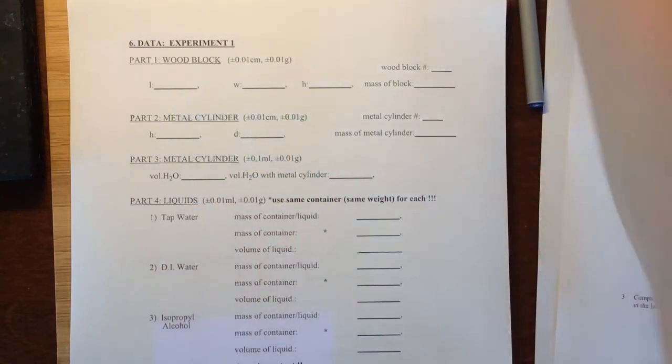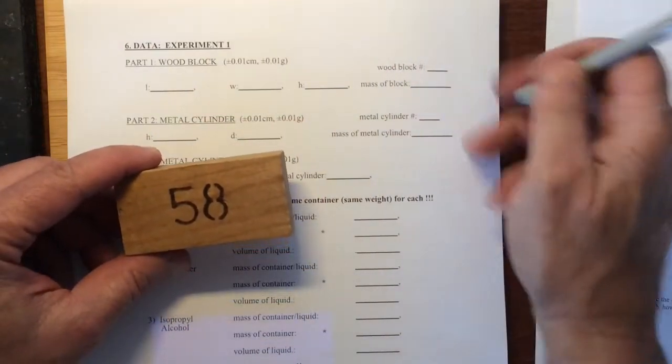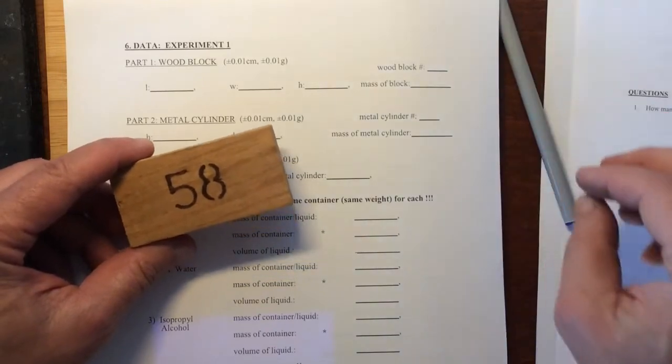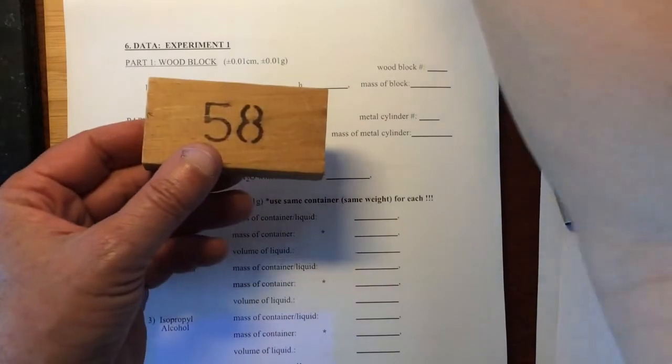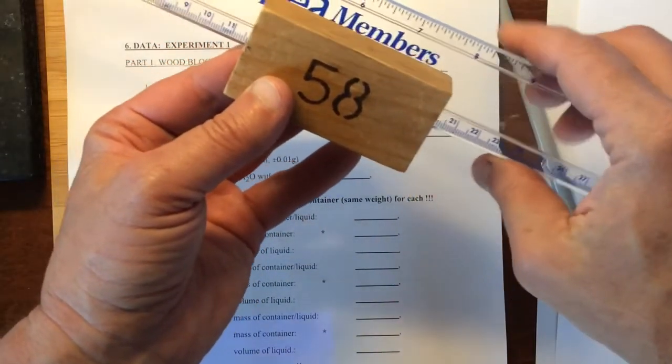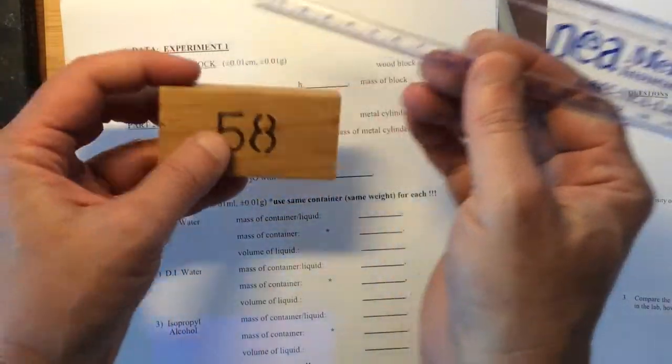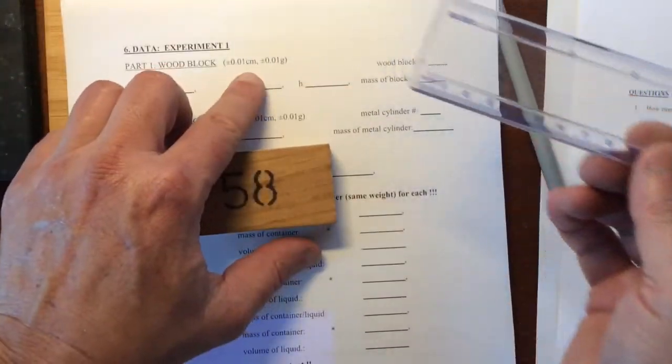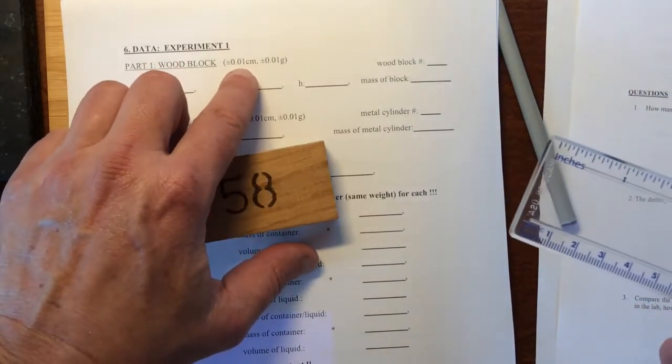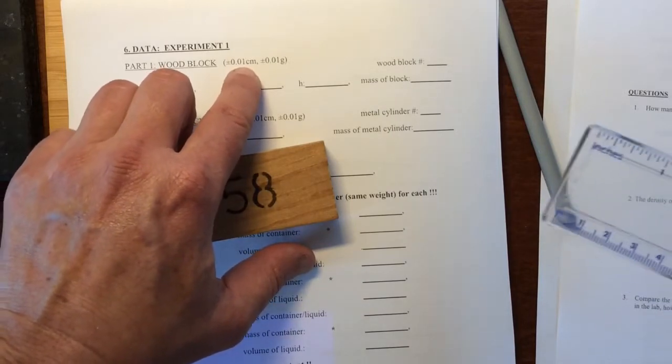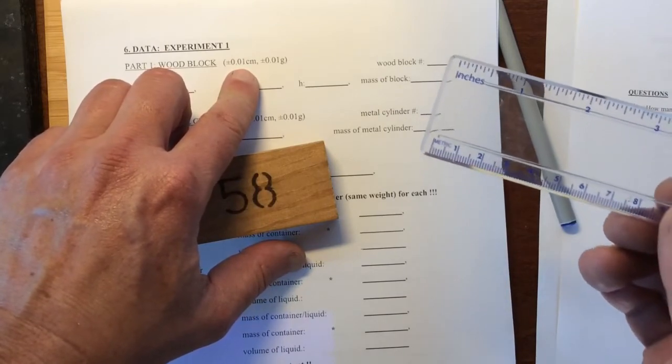We have a series of little blocks. This one's block number 58, so up here we'd want to write 58. It doesn't really matter what we call our length, or width, or height. What's important is that we get the three unique axes, and that we use our metric side of the ruler. The directions say read things to the plus or minus a hundredth of a centimeter. That doesn't mean we end in a zero, but rather we read as well as we can, even if we have to sort of make a guess, to the hundredth of a centimeter.